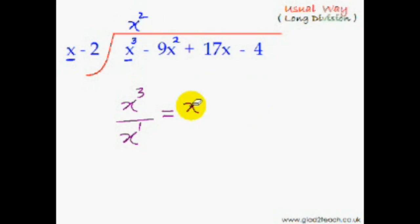Now whatever term you put here at the top, you have to multiply that with all the terms of the divisor. That means you're going to multiply this x² with this x and also with this minus 2, and whatever you get after that multiplication, you're going to put it here. x² times x is x³, and x² times minus 2 is minus 2x².